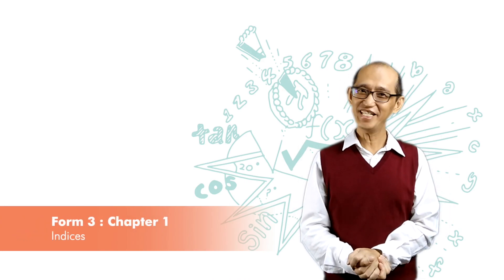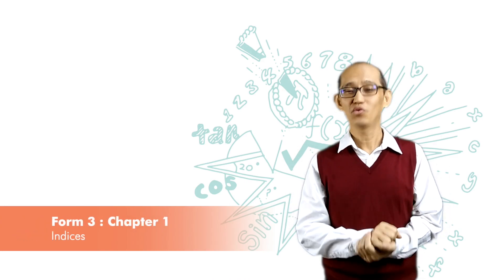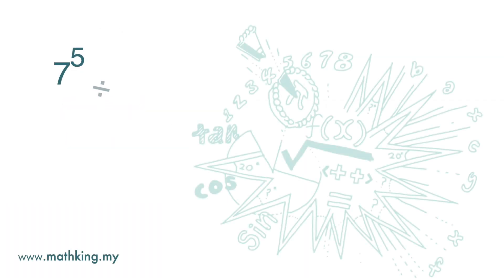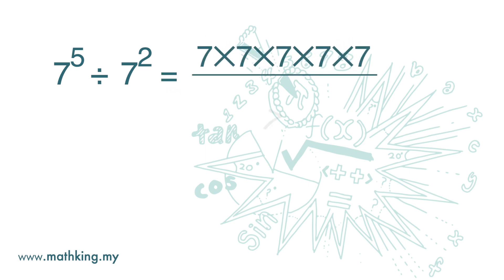We have done the multiplication of indices; next we want to move on to division of indices. Here we have 7 to the power of 5 divided by 7 to the power of 2. This can be written out in full — we cancel out the 7s and we are left with three 7s, so the answer is 7 to the power of 3.